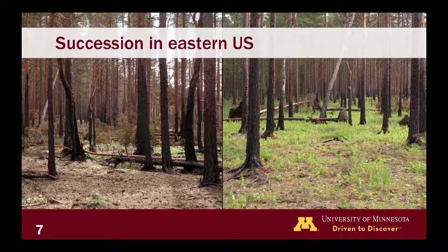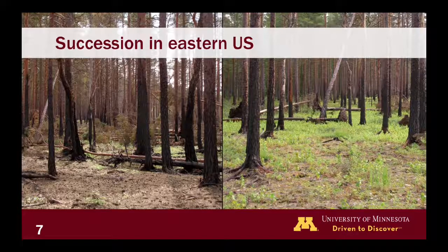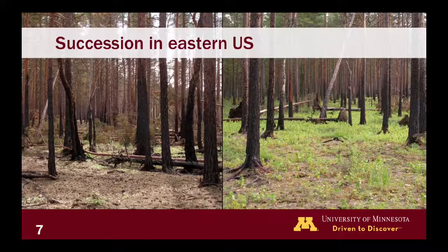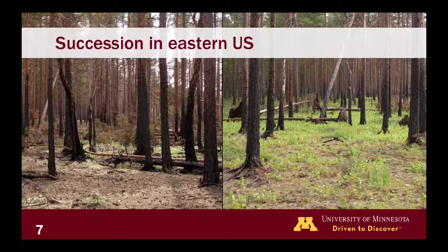Succession can come in many different forms. In the eastern United States and the Great Lakes, succession has occurred after old field abandonment — we see this orderly progression from a field moving through different stages of plant communities into more climax communities. In the southeast or western United States, succession might involve fire. There are many different processes that can move a forest through succession.